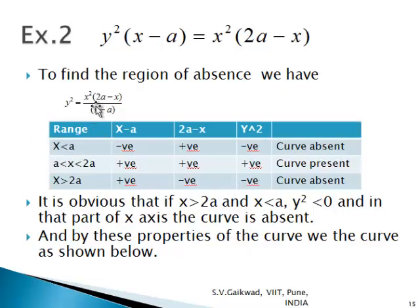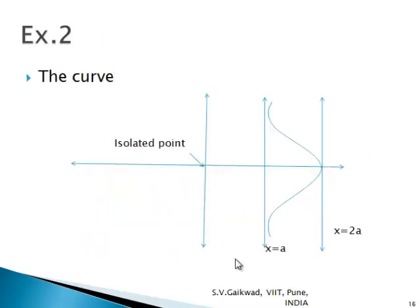For the region of absence: y² = x²(2a − x)/(x − a). The sign changes at x = a and x = 2a, dividing the x-axis into three intervals. A sign table shows y² < 0 for x < a and x > 2a, so the curve is present only between a and 2a. Using all these properties, the curve has the tangent x = 2a at (2a, 0), the asymptote x = a, and the origin as an isolated point.